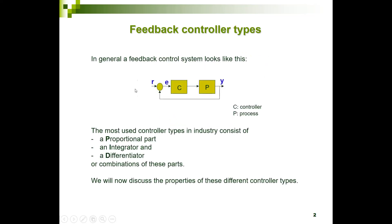This is our feedback system, which consists of a plant or process which has to be controlled. Y is the output, and this process is controlled by a controller C. The reference minus the output Y is the error, which is the input for the controller. In most industries we use a PID kind of controller.